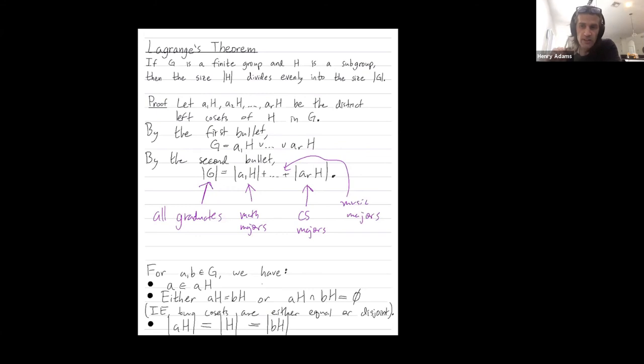If everybody only majored in one thing, then you could get the size of the graduating class by adding up the number of math majors, the number of CS majors, the number of music majors. So that works if those subclasses are all disjoint. They have no people in common. Nobody's both a math major and a music major.